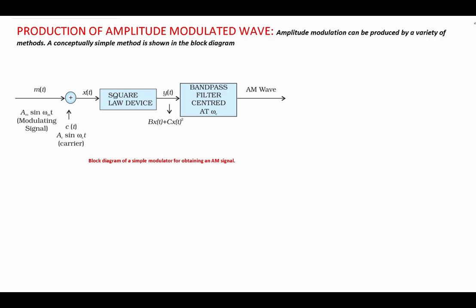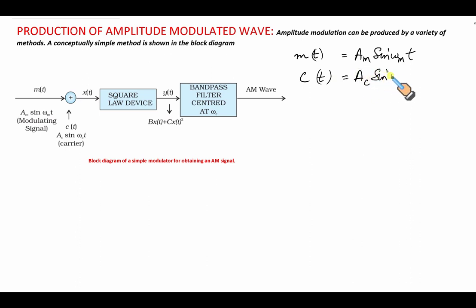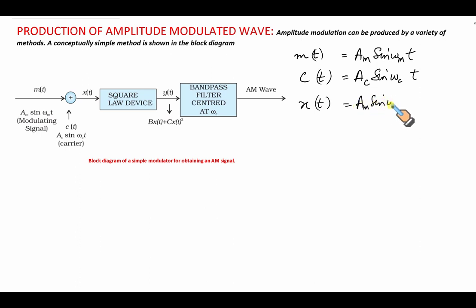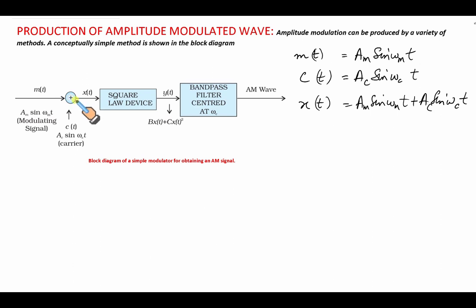Let us have a modulating signal m(t) = Am·sin(ωm·t), which is added to the carrier signal c(t) = Ac·sin(ωc·t) to produce the signal x(t) = Am·sin(ωm·t) + Ac·sin(ωc·t). The modulating signal and the carrier are added by an adder modulator to give the signal x(t).